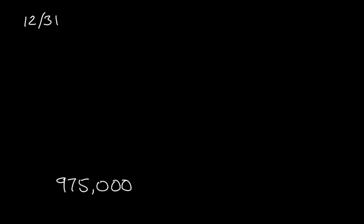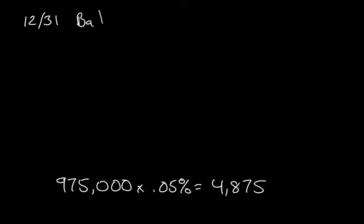So on December 31st, they are going to establish their allowance for doubtful accounts. It is 5% of the $975,000. So $975,000 was their credit sales. If you were to take 0.05% of it, you would have $4,875. So therefore, on December 31st, they had to identify their bad debt expense as $4,875.